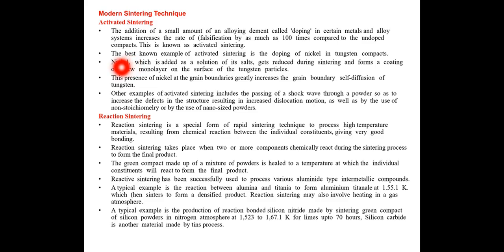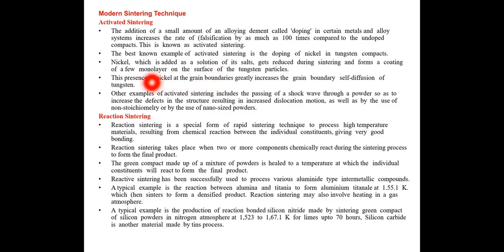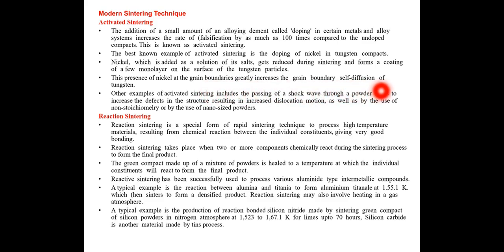The best known example of activated sintering is the doping of nickel in tungsten compacts. Nickel, which is added as a solution of its salts, gets reduced during sintering and forms a coating of a few monolayers on the surface of the tungsten particles. This presence of nickel at the grain boundaries greatly increases the grain boundary self-diffusion of tungsten.